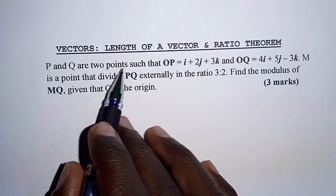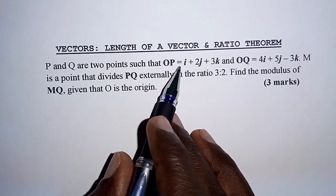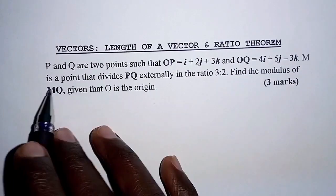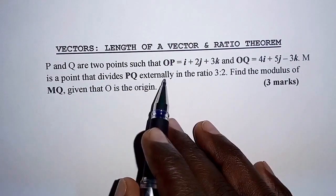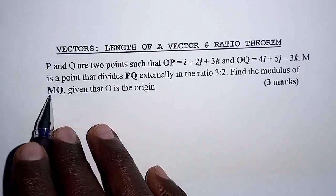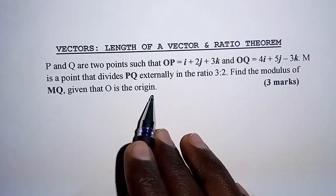P and Q are two points such that OP is i + 2j + 3k and OQ is 4i + 5j - 3k. M is a point that divides PQ externally in the ratio 3 to 2. Find the modulus of MQ given that O is the origin.